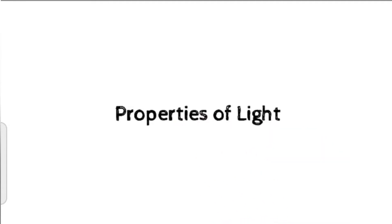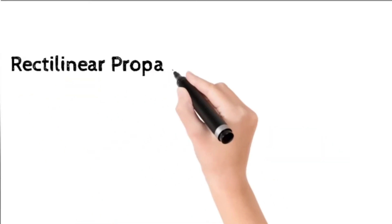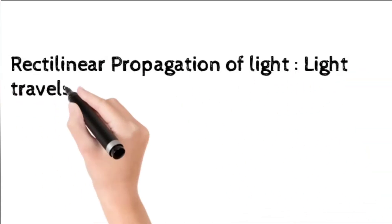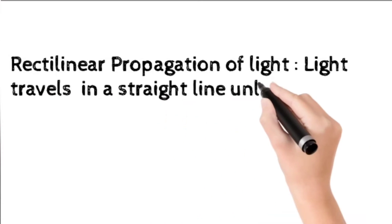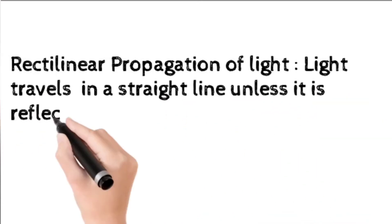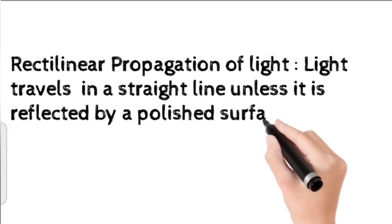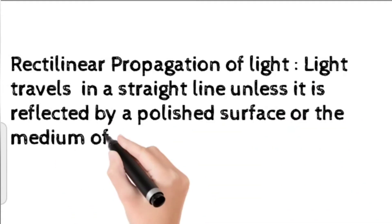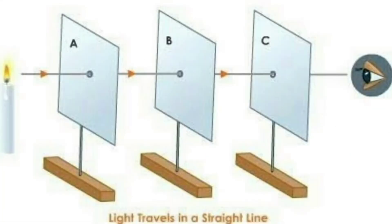Properties of light. Here are some important properties of light. First one: rectilinear propagation of light. Light travels in a straight line unless it is reflected by a polished surface or the medium of propagation is changed.